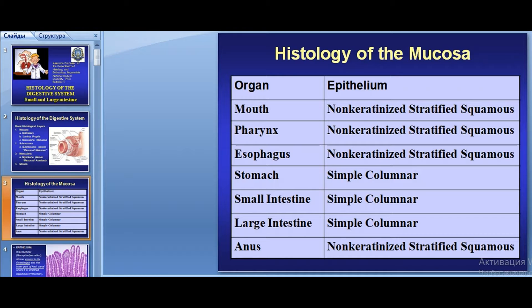In the lower third of the esophagus, stratified squamous non-keratinized epithelium changes to simple columnar epithelium. In the stomach, the epithelium is simple columnar. In the small and large intestine the same type — simple columnar epithelium — is present, but the epithelium is not completely similar because different cell types compose it. The anus is covered by stratified squamous non-keratinized epithelium.